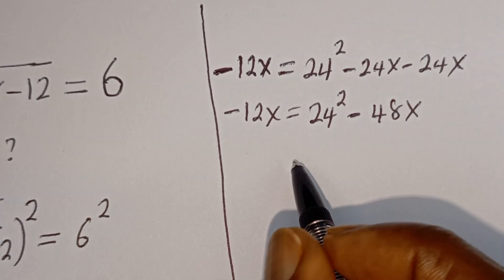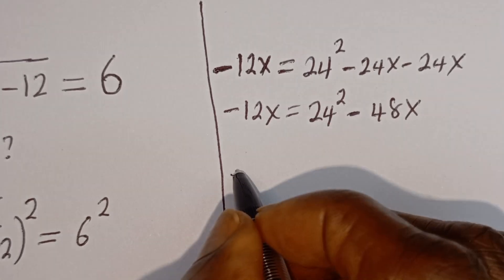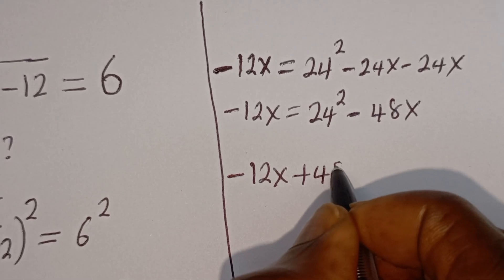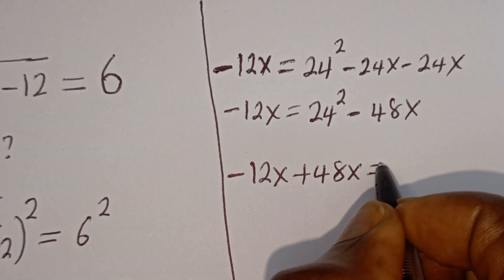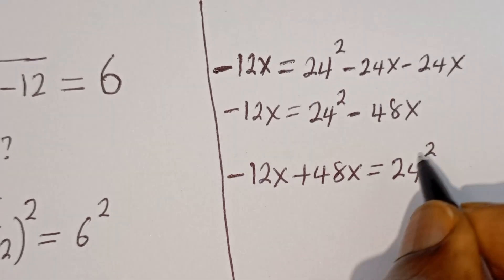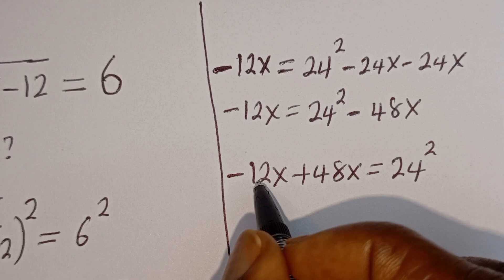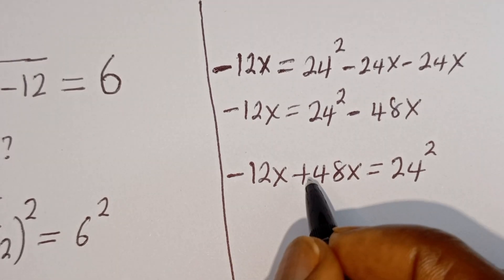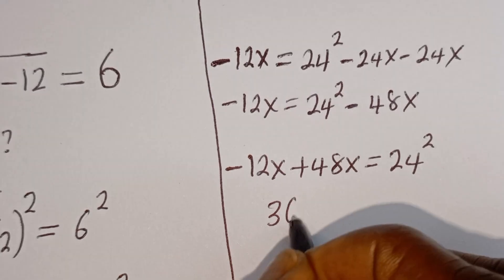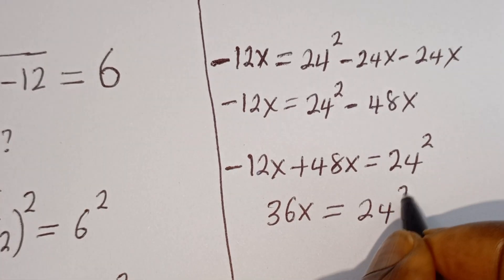Then the x squared terms cancel. We are left with minus 12x is equal to 24 squared minus 48x. Let's rearrange and collect like terms: minus 12x plus 48x is equal to 24 squared, giving us 36x is equal to 24 squared.